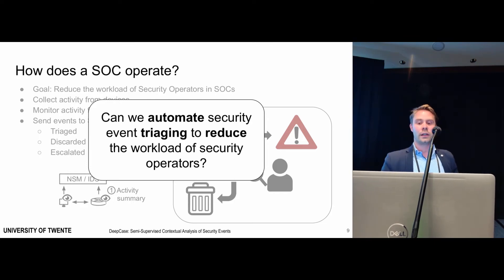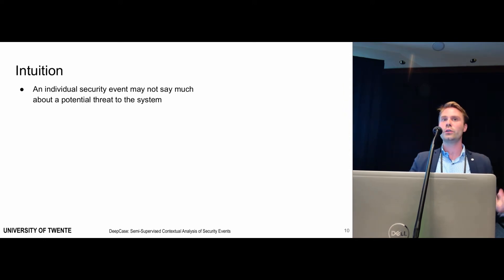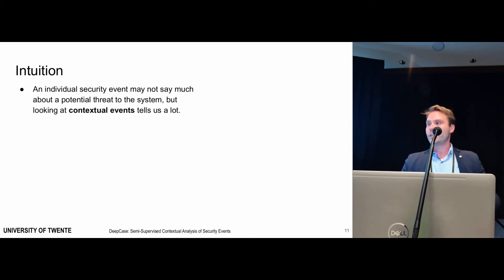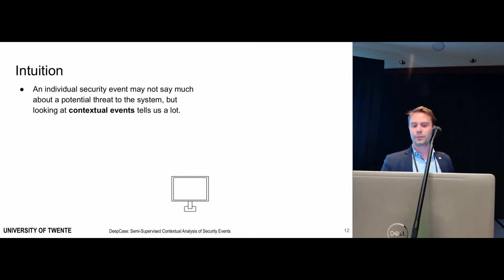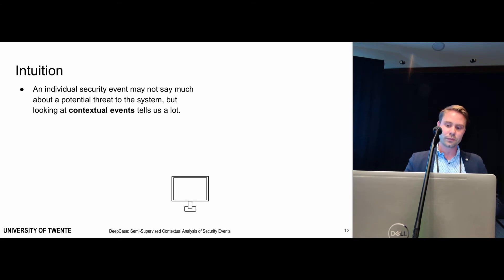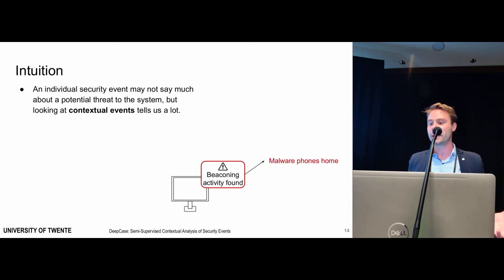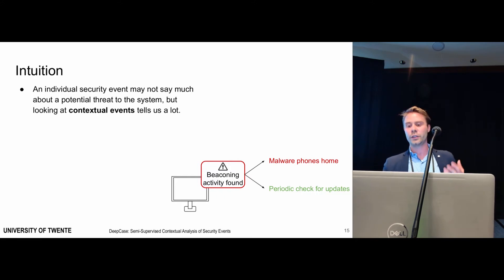The key intuition behind our work is the following. Suppose we look at one security event in isolation — it may not tell us a whole lot about what is going on. But looking at the other security events surrounding it might tell us more about what is happening on the system. For example, suppose we find some beaconing activity on a device. This could be malware trying to phone home and contact a command and control center, or it could be a benign application simply checking periodically for updates.